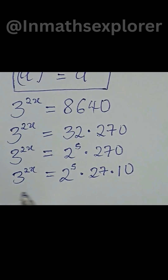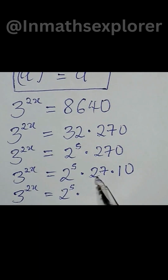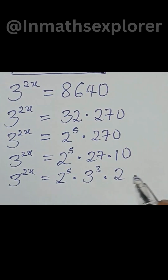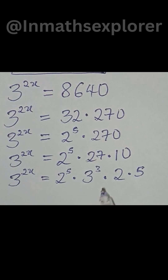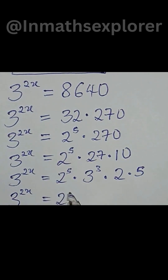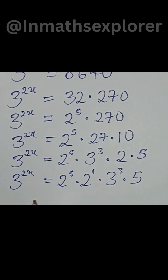We can simplify further. We have 3 to the power of 2x is equal to 2 to the power of 5, multiplied by 3 to the power of 3, multiplied by 2 to the power of 2, multiplied by 5. We can bring this 2 to the power of 1 together with this 2 to the power of 5, so we have 3 to the power of 2x is equal to 2 to the power of 5 multiplied by 2 to the power of 1, multiplied by 3 to the power of 3, multiplied by 5.